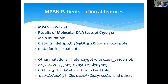What are the results of molecular DNA tests of C19orf12? The main mutation we found in my patients: 30 patients had C204 and C214 deletion. Other mutations were heterozygote mutations with other variants, as you can see on the slides.